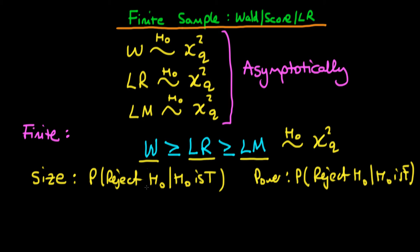We want the size to be smallest and the power to be largest — so the probability of rejecting the null hypothesis, if it is false, should be as large as possible. It turns out that these two properties are normally in opposition: if the size of a statistical test decreases, then the power also decreases. So whereas the size decrease is desired, the power decrease is not.